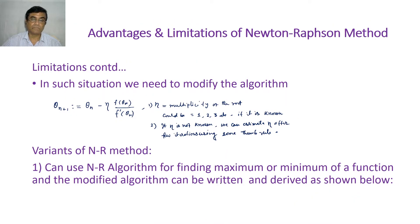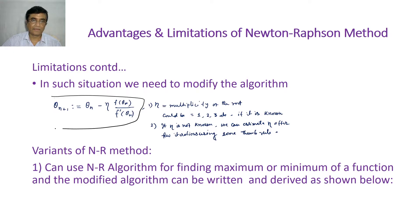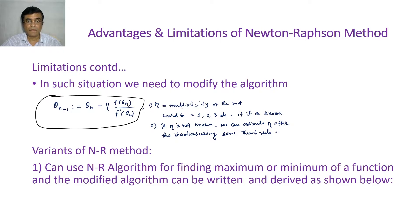In such a situation we need to modify the algorithm. We introduce a factor η — similar to a learning rate in machine learning but different. This factor controls the term f(θ_n) divided by the derivative f'(θ_n), where η is the multiplicity of the root. It could be 1, 2, or 3, depending on the multiplicity. In the example above, multiplicity is 2, so η could be 2.